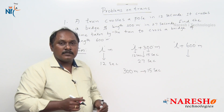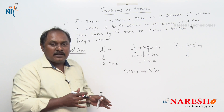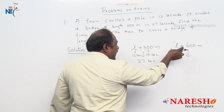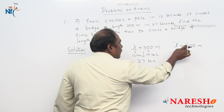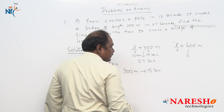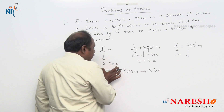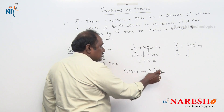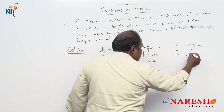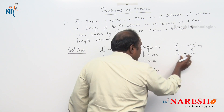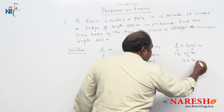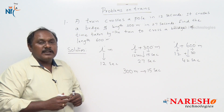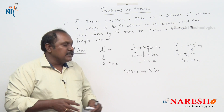Now for the answer: to find the time taken by the train to travel l plus 600 meters — l meters takes 12 seconds, and 600 meters: since the train travels 300 meters in 15 seconds, it travels 600 meters in 30 seconds. So the answer is 12 plus 30 = 42 seconds. The time taken by the train to cross a bridge of length 600 meters is 42 seconds.